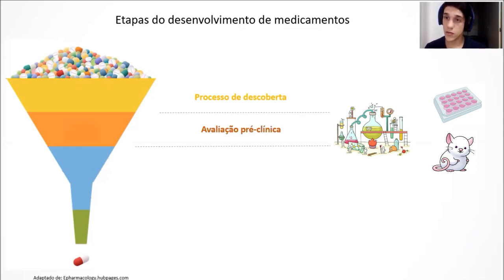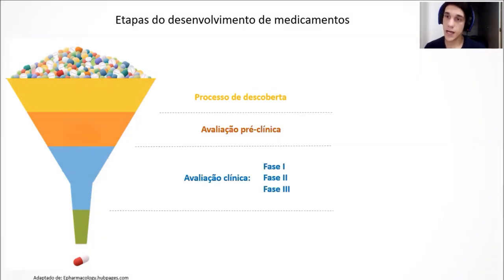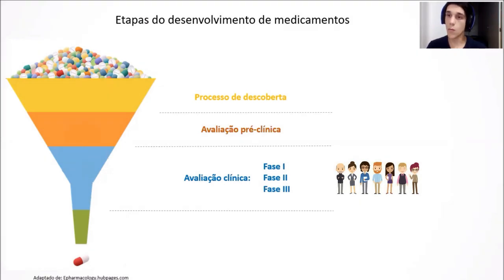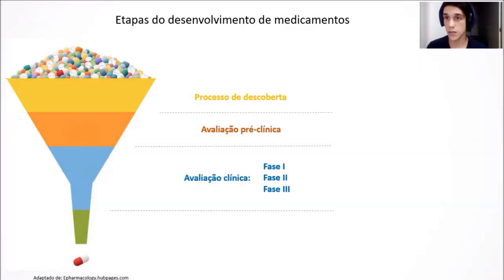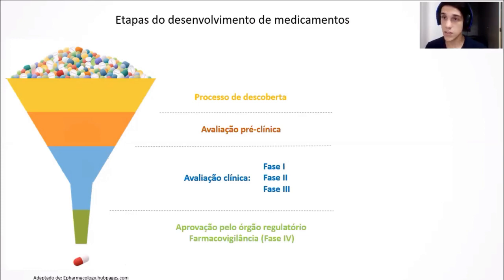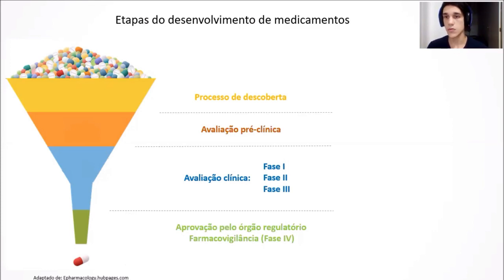Uma vez justificados os riscos de estudar esse composto em humanos — justificados com o potencial benefício do estudo — são iniciados os estudos clínicos, a avaliação clínica. Essa avaliação acontece em três fases experimentais, com aumento de complexidade e número de participantes, nas fases 1, 2 e 3. Se ficar comprovada a segurança e eficácia, o composto é aprovado pela agência regulatória e é iniciada a farmacovigilância, ou fase 4 — um período de avaliação do medicamento já na população, no cenário mundo real, e não no cenário controlado dos estudos clínicos.